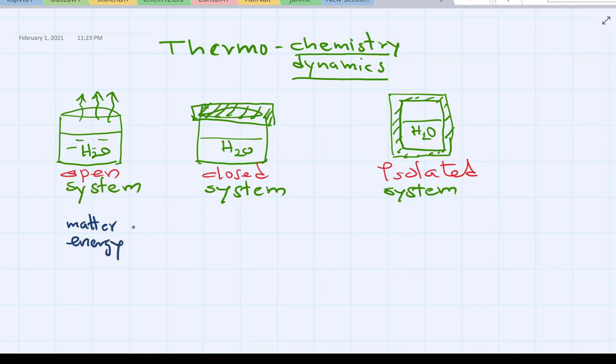The first open system, exchange matter and energy, lose and gain. In the closed system, you only gain or lose energy. Isolated system, nothing is lost, no matter, no energy is lost or gained. So that's the three systems we will be talking about.